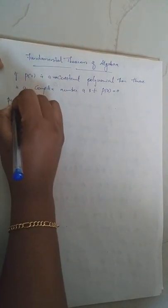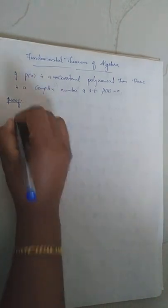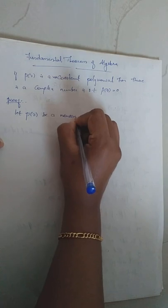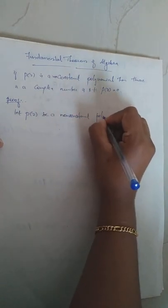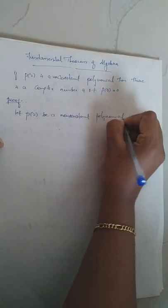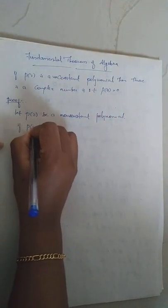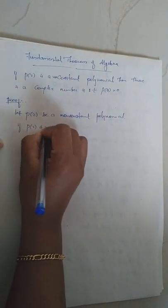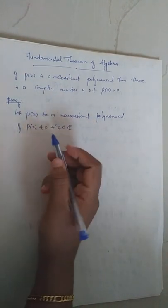So how will you prove this? It is very, very important and very simple to prove. Let P(z) be a non-constant polynomial. Assume that P(z) is not equal to 0 for every Z in C — that is, suppose P has no zeros.